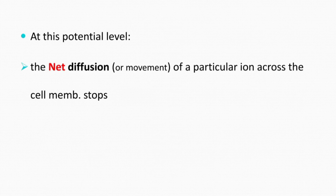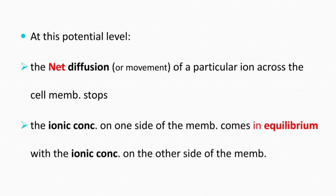At this potential level, two things happen: first, the net diffusion of that particular ion across the membrane stops; and second, the ionic concentration of that ion on one side of the membrane comes into equilibrium with the ionic concentration on the other side. That is why the Nernst potential is also called the equilibrium potential.